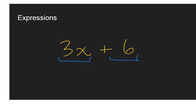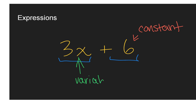Within those terms, if there's a number with no variable attached to it, that's called a constant. If we have a letter, those are called variables. And lastly, if we have a number that comes in front of the variable, that is what we call a coefficient. That pretty much wraps up everything we have to talk about today. Please let me know if you have any questions, and have a great day.